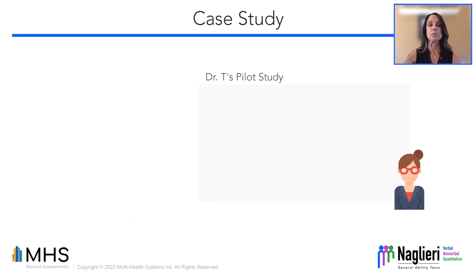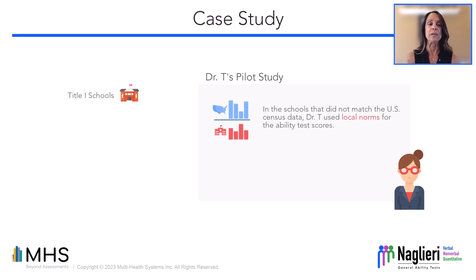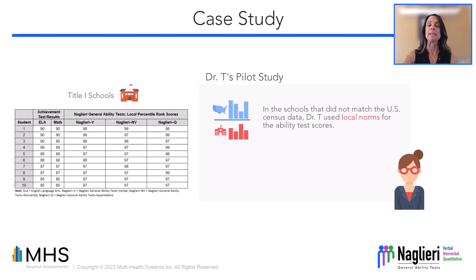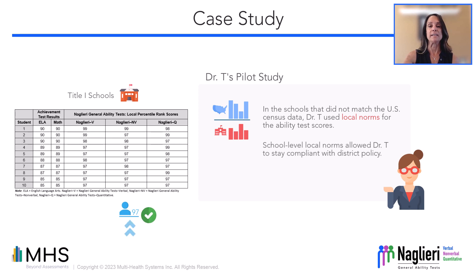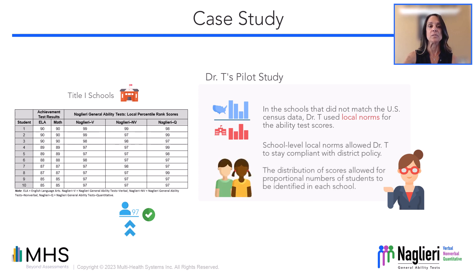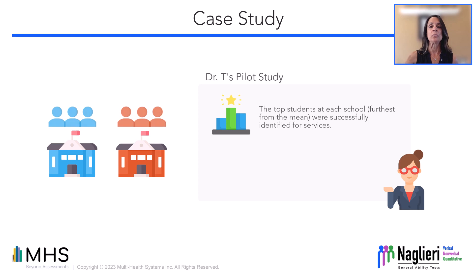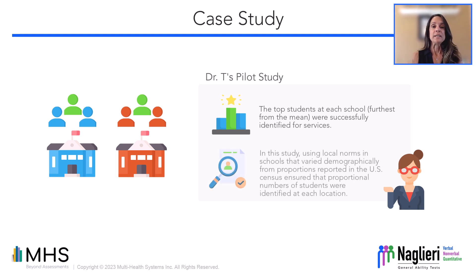For the Central Creek School District schools that did not match the U.S. Census data in racial or ethnic makeup, Dr. T used local norms for the ability test scores. She was able to comply with her district's policy of a 97th percentile cut score on the ability tests by using school-level local norms with the Nagliari General Ability Test. The distribution of scores among the sample of students within each school allowed for a proportional number of students to be identified at the 97th local percentile or above on at least one of the three Nagliari General Ability Tests. The top students at each school were identified for services as they were the furthest away from the mean and would benefit from specialized instruction. This shows that using local norms in schools that varied demographically from the U.S. Census ensured that proportional numbers of students were identified and served at each location.